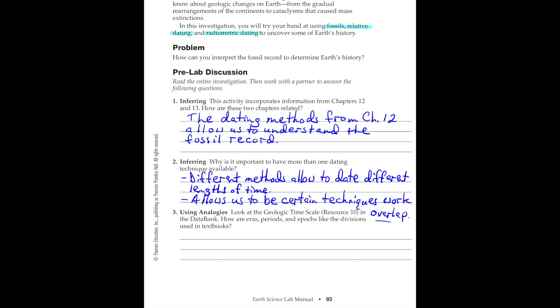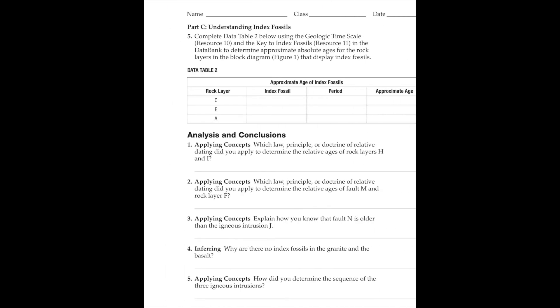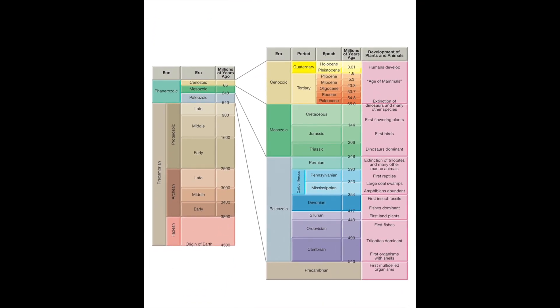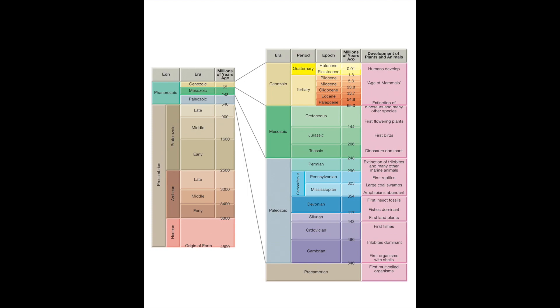Looking at the geological timescale in the databank — here's our geological timescale in color. Reading from the bottom up, this is not to scale. We have a vast area known as Precambrian time, which is not really a single eon but encompasses the Hadean, the Archean, and the Proterozoic. This is a vast period of geological history starting from the origins of Earth, working upward until we reach the Phanerozoic Eon — the eon of visible life.